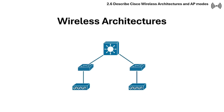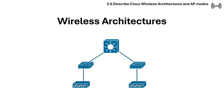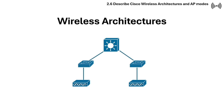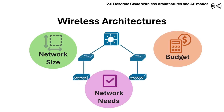Let's now discuss and understand how wireless networks are architected in Cisco environments. There are different wireless architectures and each architecture has its advantages and is chosen based on factors like network size, management needs, and budget.